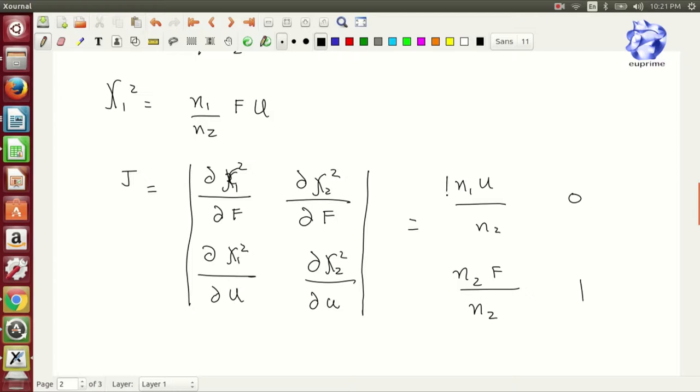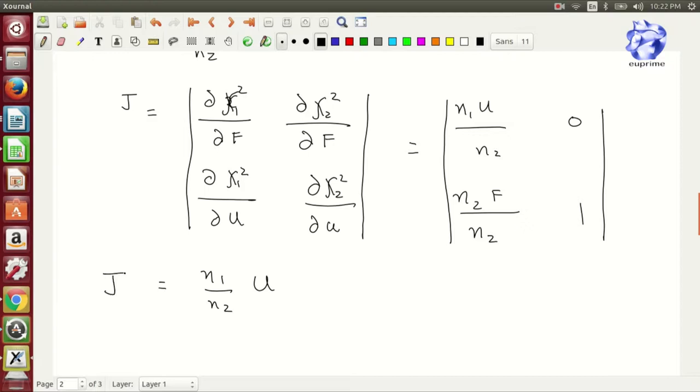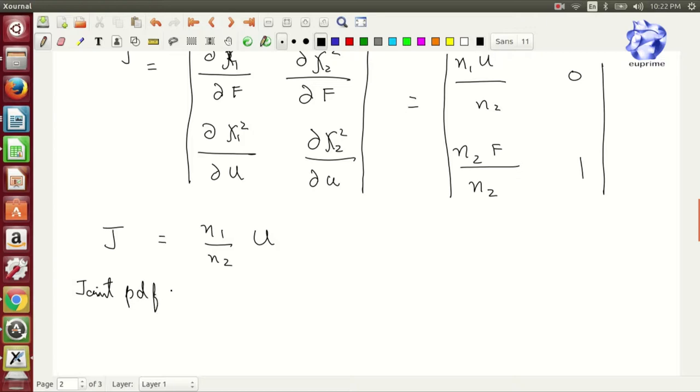This becomes very simple to find the determinant, which you can do by multiplying the diagonals with respect to 1, which contains 1 and the next value, and skip out the 0. The other way to simplify the equation: joint PDF of F and u is g of F comma u.